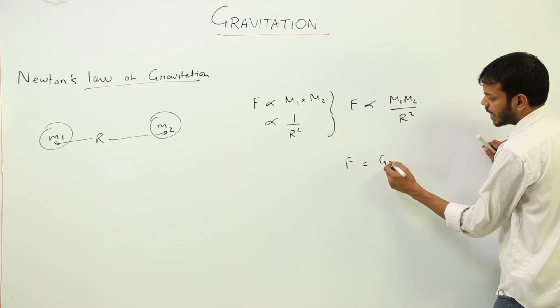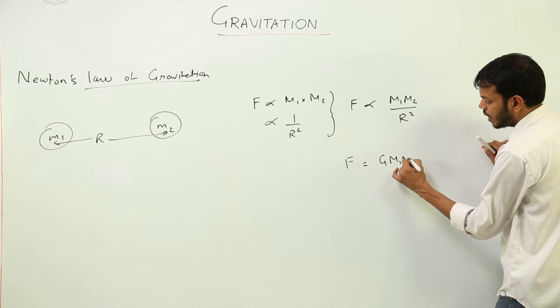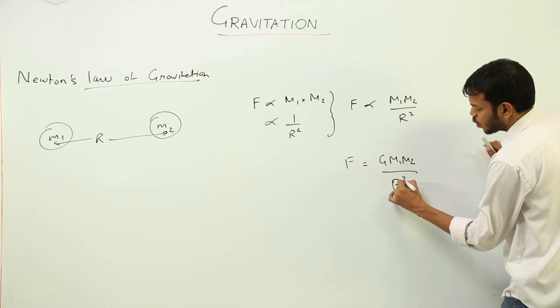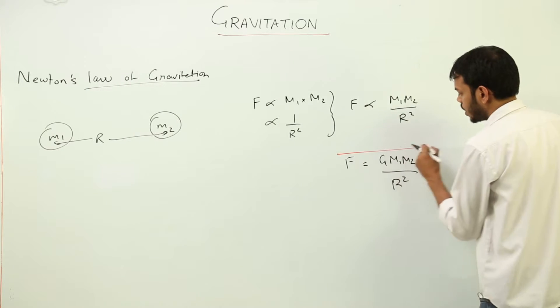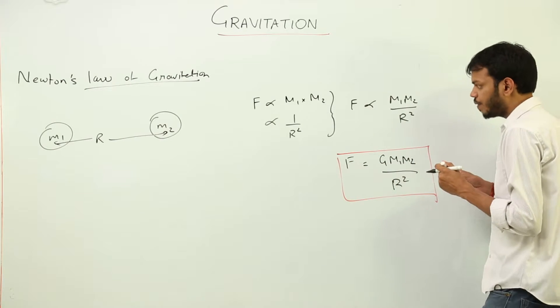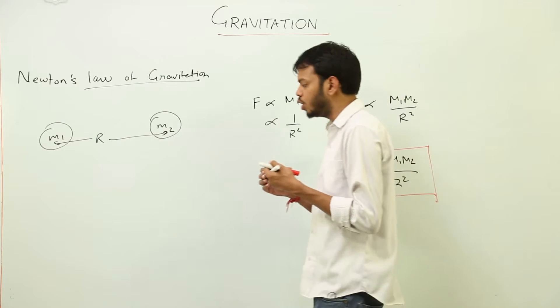So the equation becomes F equals G M1 M2 over R square. This is the mathematical form of Newton's gravitational law or Newton's law of gravitation.